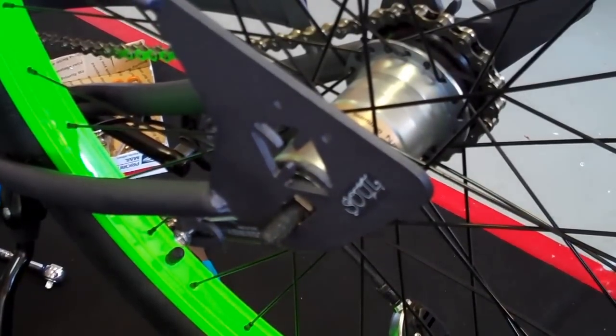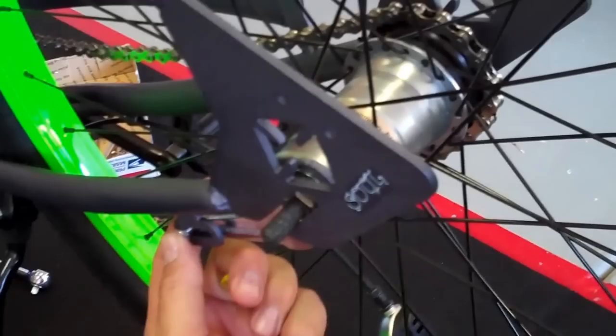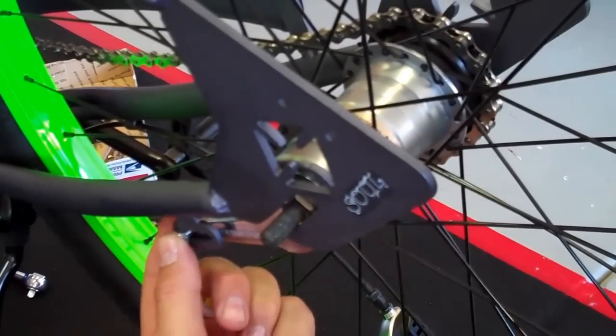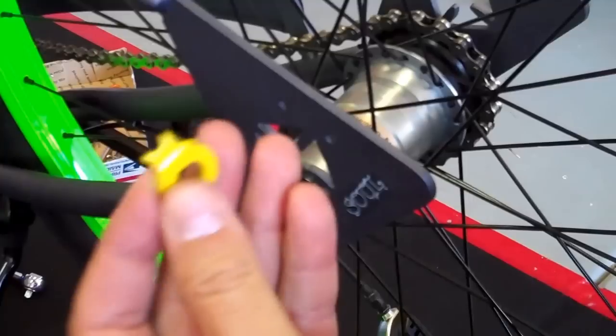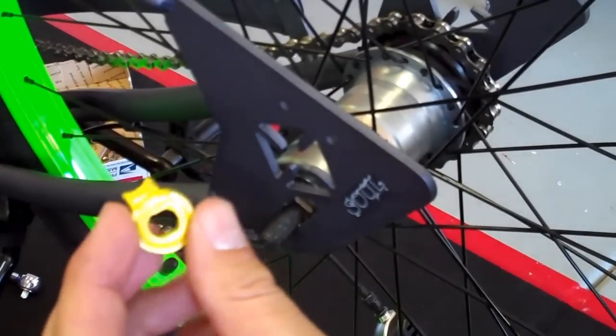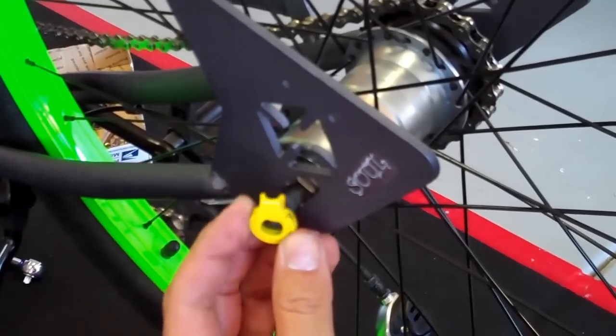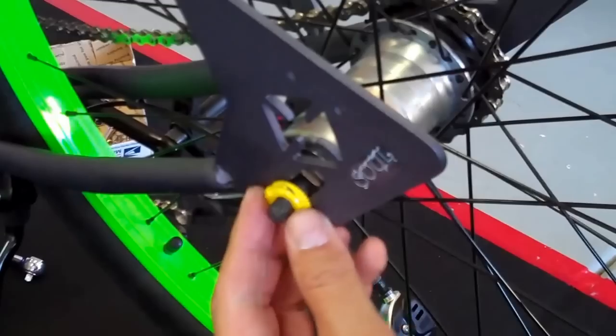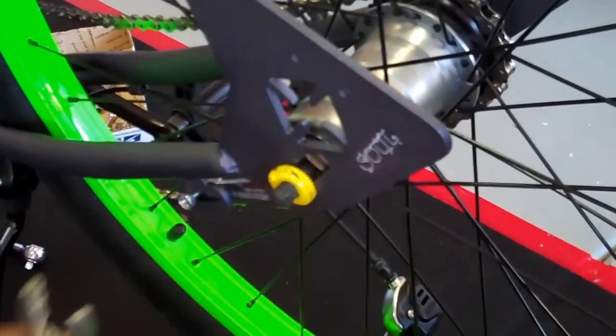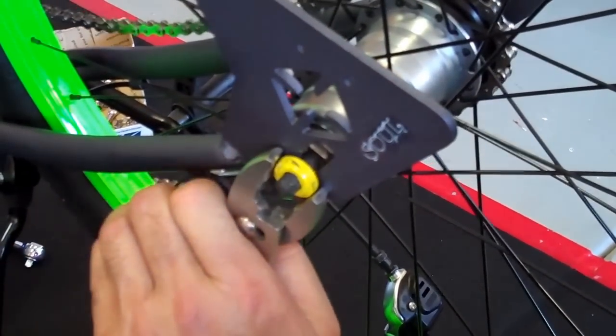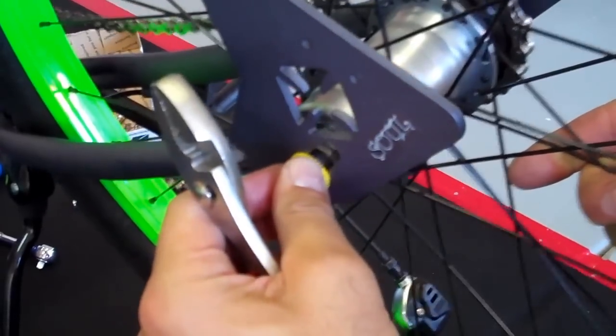Once you get your back wheel cradled in the dropouts, leave the coaster brake hooked up and take your yellow safety locking spacer and put it on the axle. Once it's on the axle, you may need to move it over a little bit to fit into the slots so the wheel will move freely up and back.